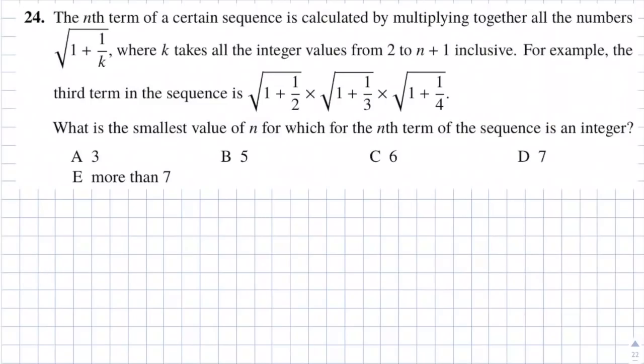Question 24. The nth term of a certain sequence is calculated by multiplying together all numbers of the form √(1 + 1/k), where k takes all integer values from 2 to n+1 inclusive. For example, the third term is √(1 + 1/2) × √(1 + 1/3) × √(1 + 1/4). What is the smallest value of n for which the nth term is an integer?